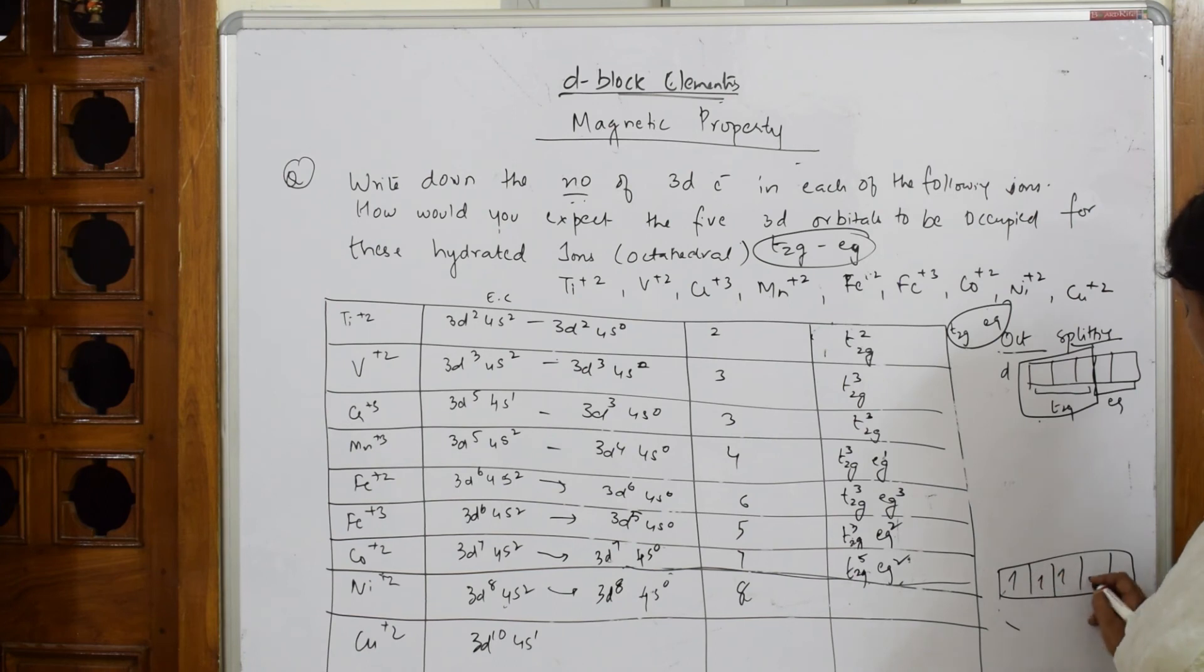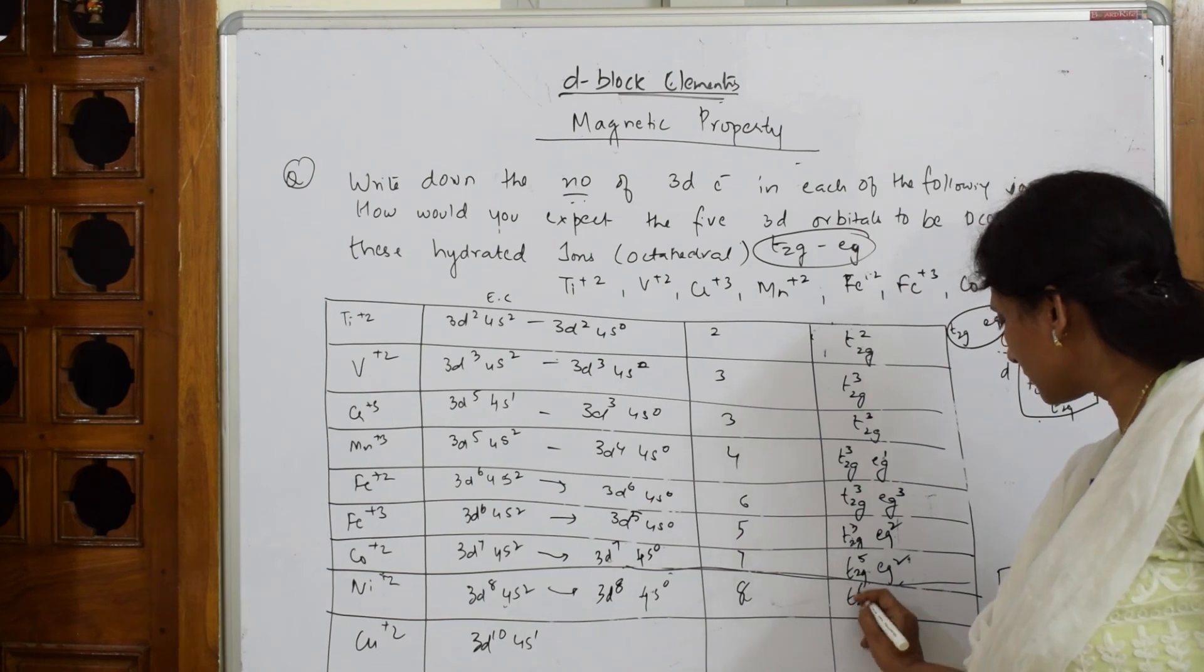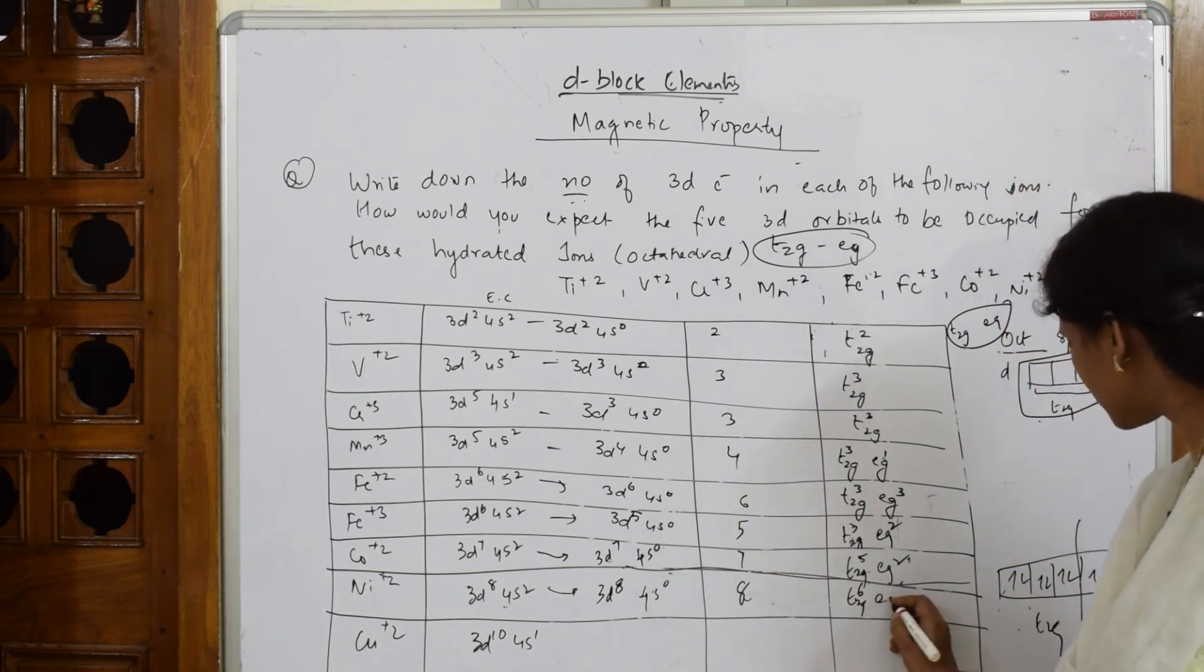1, 2, 3, 4, 5, 6, 7, 8. So T2G. How many do we have? This is T2G. This is EG. T2G has 6 electrons. And EG has 2 electrons. Done. We are almost coming closer.